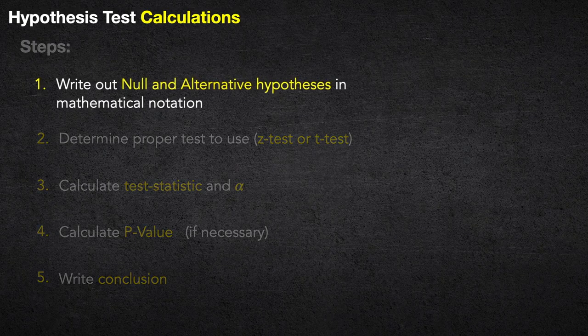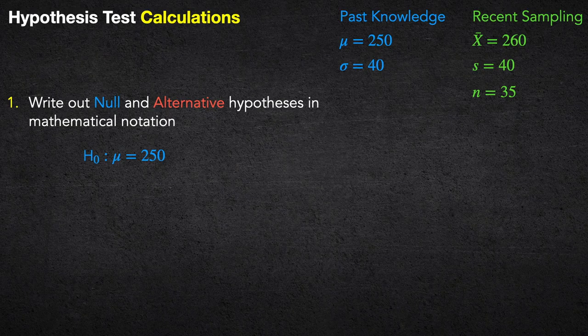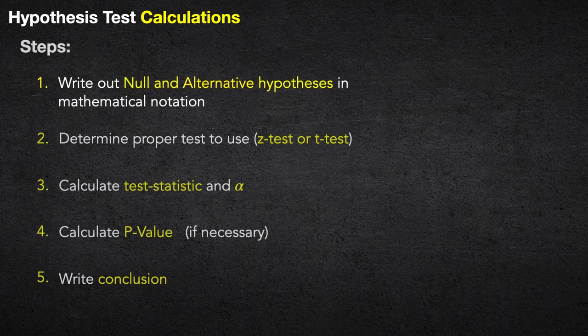Step 1: write out the hypotheses. The null hypothesis H₀ is μ = 250 — that's what we've always believed. Our alternative hypothesis is μ > 250. Notice we don't say anything about 260, which is our x̄ — the alternative hypothesis is always less than, greater than, or not equal to what we believe the mean to be. We use 260 in the calculation, but not when setting up the alternative.